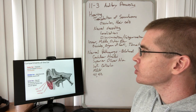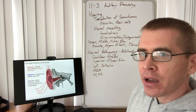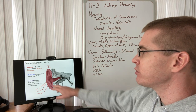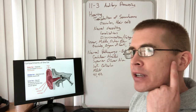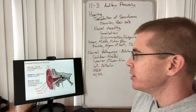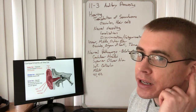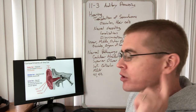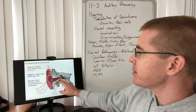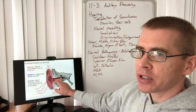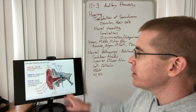We have an outer ear called the pinna. It has various regions: a helix, anti-helix, tragus, and anti-tragus. We have a tympanic membrane that separates the outer ear from the middle ear.